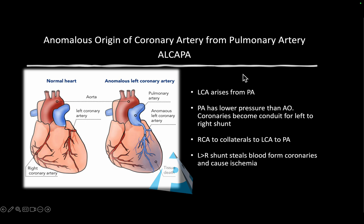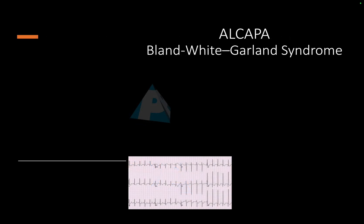What is actually anomalous origin of coronary artery from pulmonary artery, called ALCAPA? Normally, the right coronary artery arises from the right sinus of the aorta and the left coronary artery arises from the left sinus of Valsalva. But instead of the coronary artery coming from the aorta, it takes origin from the pulmonary artery. As the PA pressures are lower than the aortic pressure, reverse flow starts from the aorta to the right coronary artery through collaterals, and flow reversal in the left coronary artery into the pulmonary artery becomes a coronary left-to-right shunt.